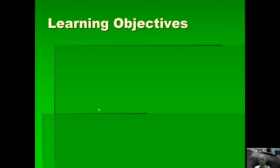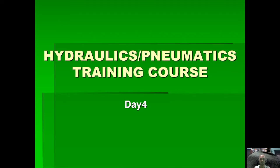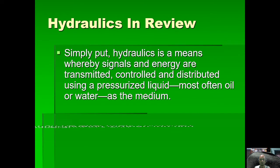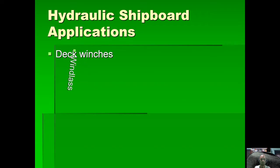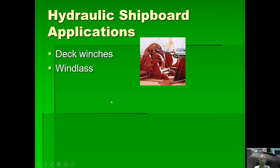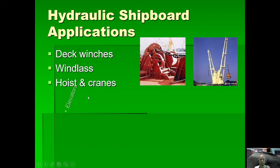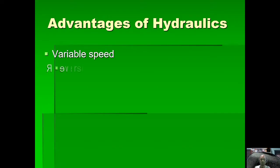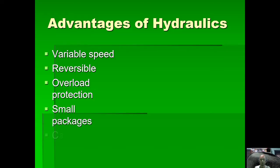Good day everyone, we will be talking more on pneumatics and hydraulics diagrams. Applications of hydraulic systems on shipboard include deck winches, windlass, hoist and cranes, elevators, cargo pumps and valve operations, and ship steering systems. Advantages of hydraulic systems include variable speed, reversible operation, overload protection, and small package size.